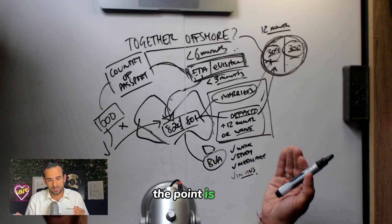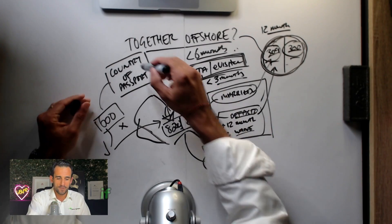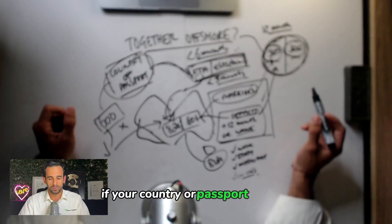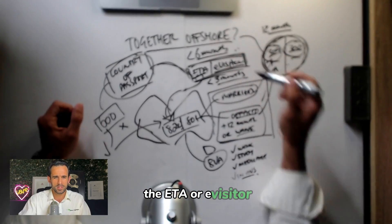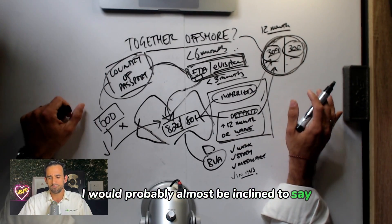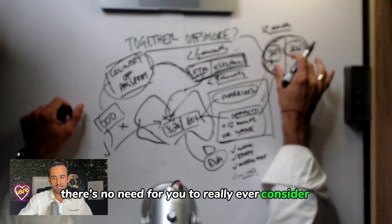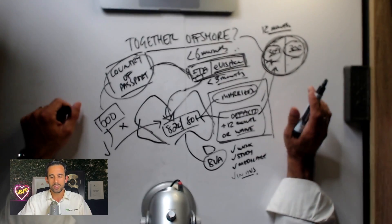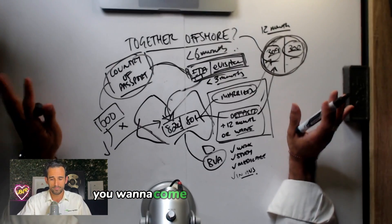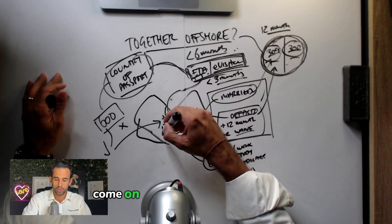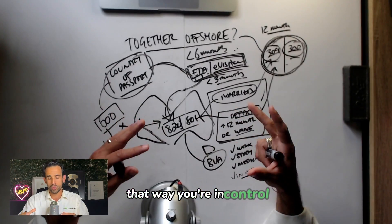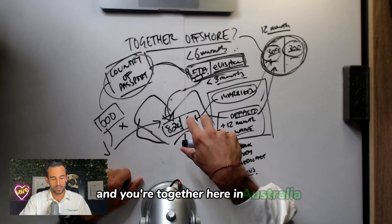So the point is that if your country of passport permits the ETA or e-visitor, I would probably almost be inclined to say there's no need for you to really ever consider this offshore pathway. Just wait until you know you want to come, apply for these visas, come onshore, and apply for an onshore. That way you're in control, the application is assessed here, and you're together here in Australia.